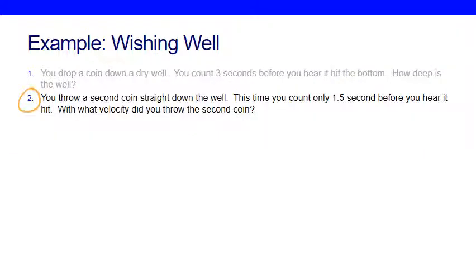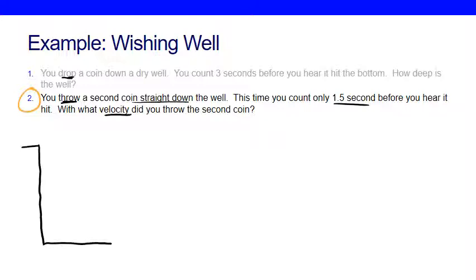Now focusing on the second question — it's a different situation, so I need to set it up differently. I'll reset my picture because now I have a coin going down the same well, but this time we're throwing it, not dropping it. So I'll redraw my picture with the new situation. There's the well, there's a coin, but this time instead of being dropped with initial velocity zero, I still call this V1, but I don't know what it is — it can't be zero. I threw it straight down.